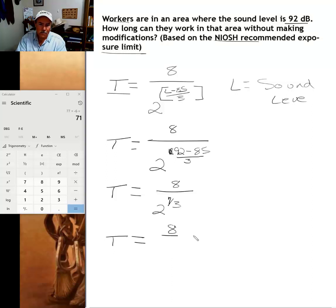Let's simplify that. 7 divided by 3 would be 2 and 1 third, or 2.33. And let's figure out what 2 to the power of 2.33 is.